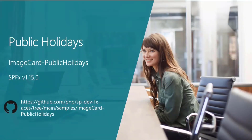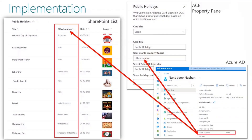On the implementation side, this solution is backed by a SharePoint list which needs to be present on your SharePoint home site. This list has a simple schema to store location-wise public holidays. First, we have a title column — the out-of-the-box column — which represents the public holiday title. The second, more important column is the office location, a choice field to present the locations where a holiday applies, since one holiday can apply to multiple locations.